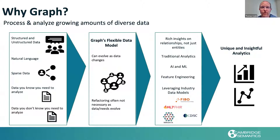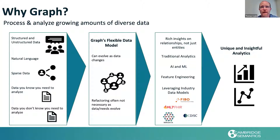All this drives insights on the relationships as they're a first class citizen in a graph database. We also support traditional analytics and AI and ML. There are many industry standard data models which support RDF and the graph model — FIBO for financial services, HL7 FHIR for healthcare — and there are also many public knowledge graphs like Wikidata and DBpedia, and these continue to grow and expand.